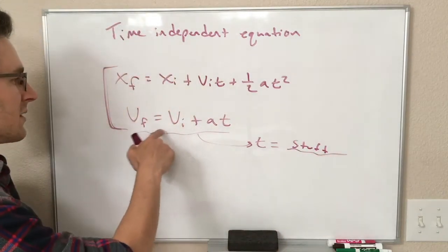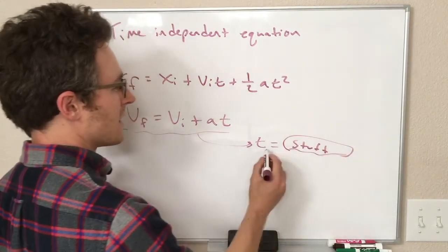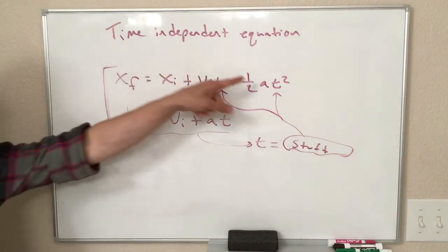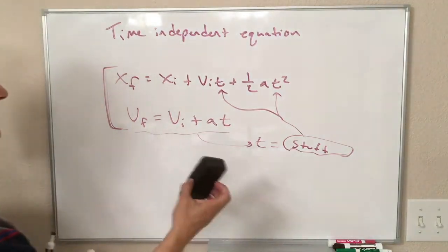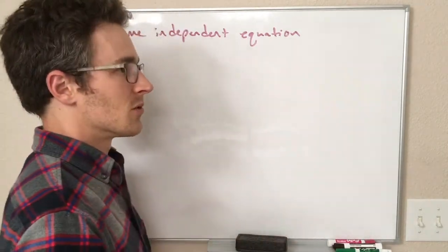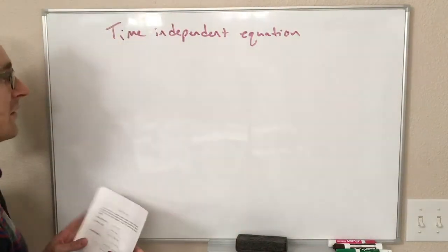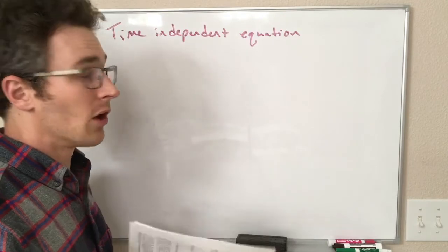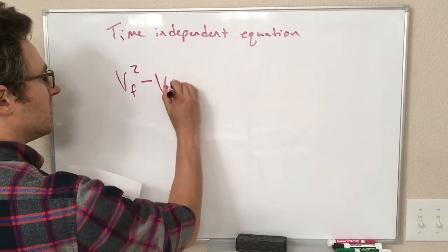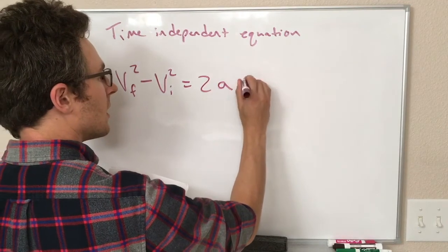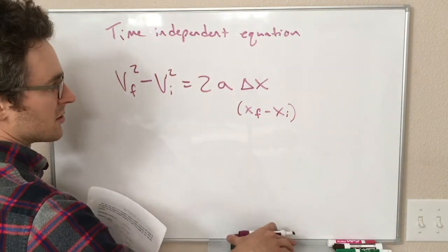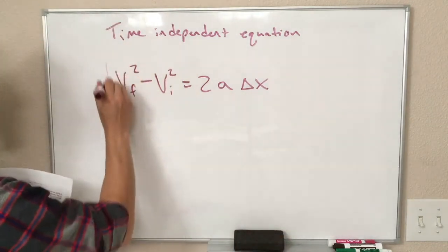And then from that we get the equation that I'm about to write. So this isn't coming from some super mysterious place, it is just a little algebra done on the two equations we've already seen. So this is really telling us something we already know in some way or another. So the equation is this, v-final squared minus v-initial squared equals 2 times a times delta x. We could also write this as x-final minus x-initial, but it's easier to write it as delta x for now. So this is our time-independent equation.